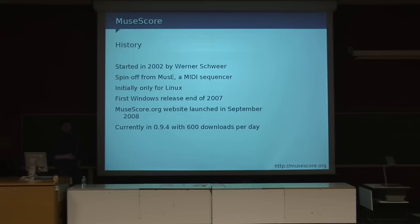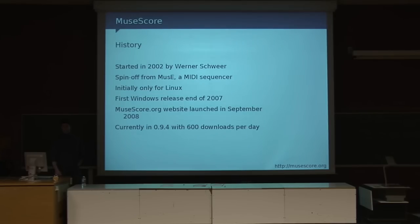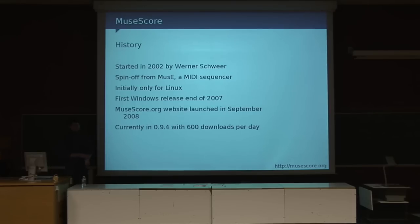By that time we had around 50 downloads per day, which wasn't bad knowing that there was zero marketing around it. Then in September 2008 we launched the MuseScore.org website, which was quite a milestone. At that point we made a step from 50 downloads per day to 200 downloads per day. Lots of newcomers were coming, people were filing bugs, and that sped up the development cycle a lot. Just two days ago the final version 0.9.4 was released, and we are right now at 600 downloads per day.